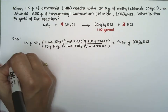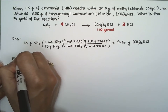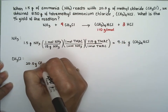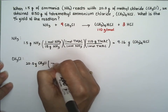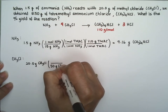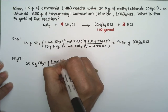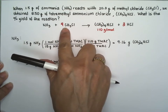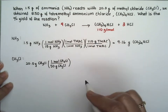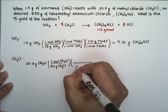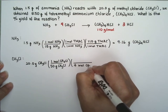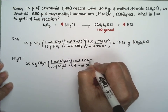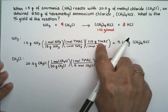Now let's check methyl chloride as the limiting reagent. We have 20 grams of methyl chloride, and methyl chloride is 50 grams per mole. According to the balanced equation, we need four moles of methyl chloride to make only one mole of tetramethyl ammonium chloride.